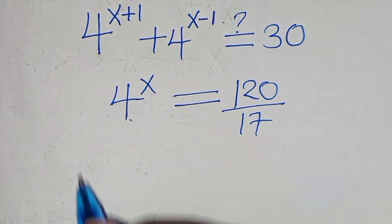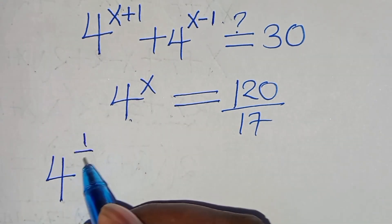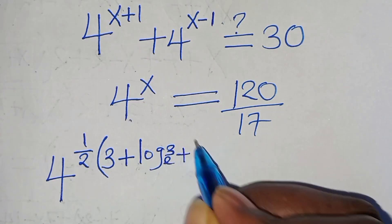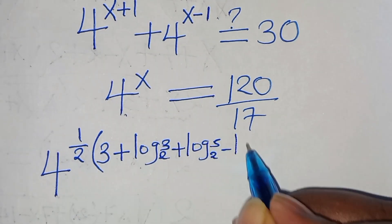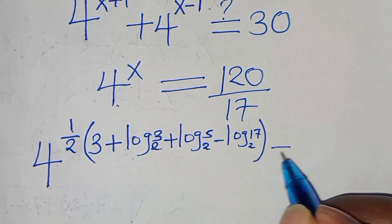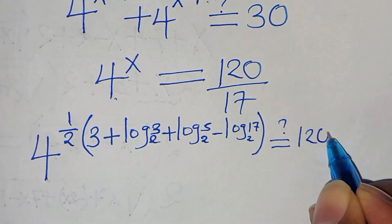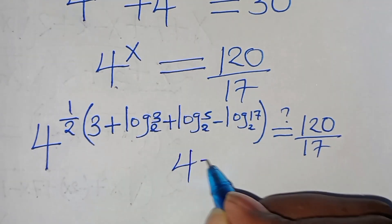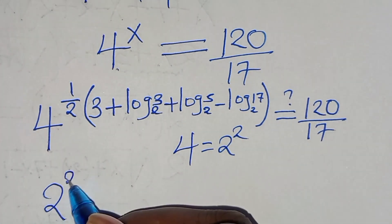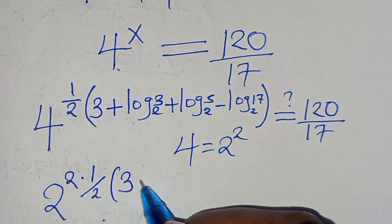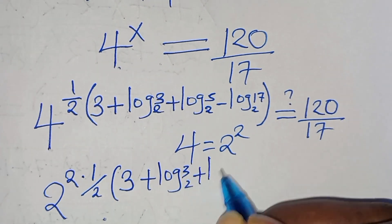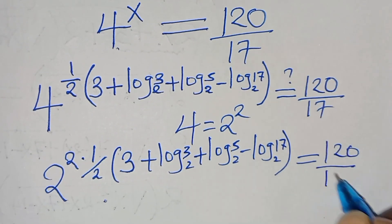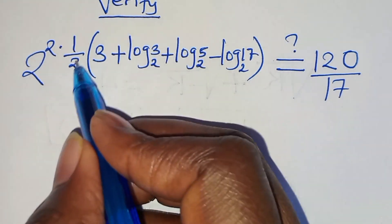Substituting x equals one half times (3 plus log₂3 plus log₂5 minus log₂17), we have 4 to the power of that expression should equal 120 over 17. We can express 4 as 2², so we have 2² raised to the power of one half times (3 plus log₂3 plus log₂5 minus log₂17), which simplifies to 2 to the power of (3 plus log₂3 plus log₂5 minus log₂17).